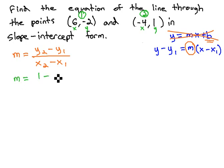y2 is 1, minus y1, which is negative 2, over x2, which is negative 4, minus x1, which is 6. By adding the opposite, we get 3 over negative 10, or simply negative 3 tenths for our slope. Actually, let me just write that as negative 3 tenths really clearly. There we go.